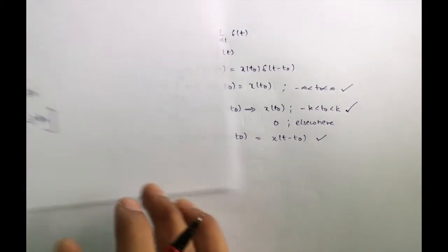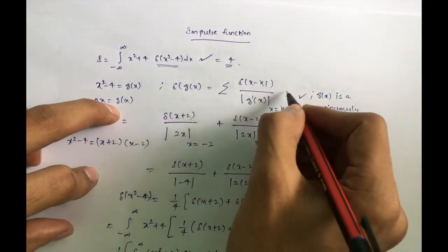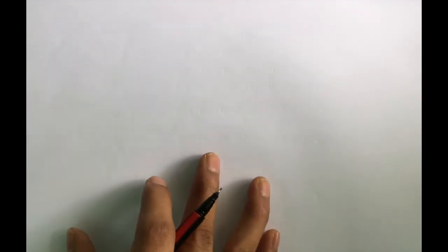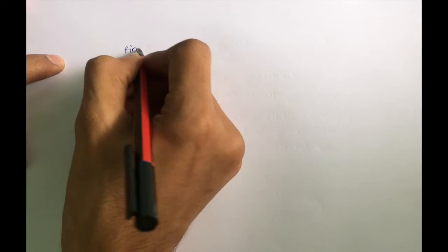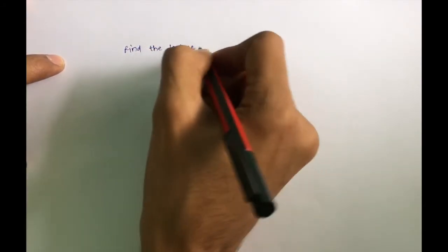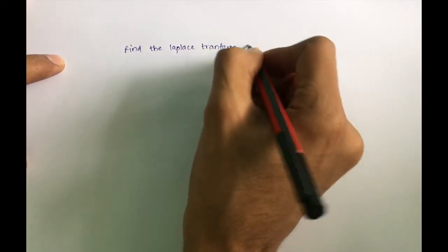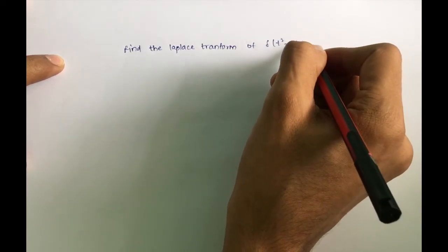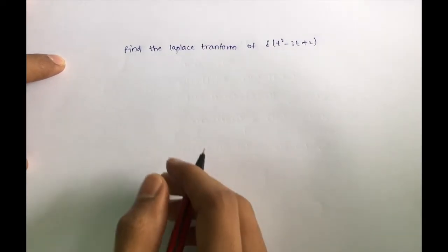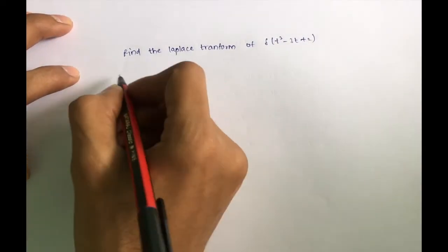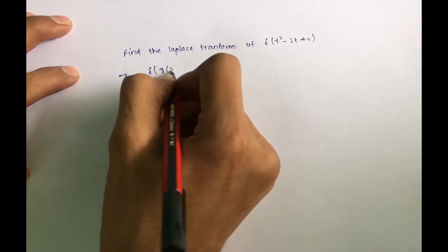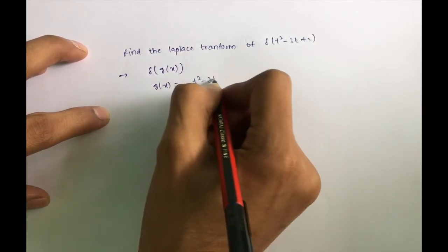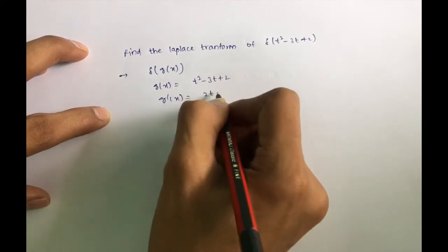Now let's take another problem. Find the Laplace transform of δ(t² - 3t + 2). Here t² - 3t + 2 plays the role of g(x) as we used before. So g(t) = t² - 3t + 2 and g'(t) = 2t - 3.